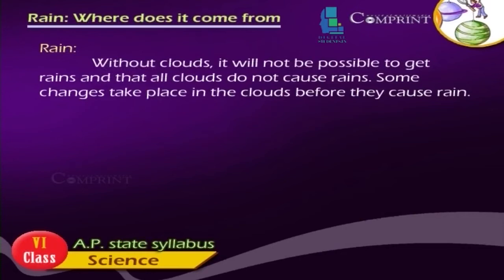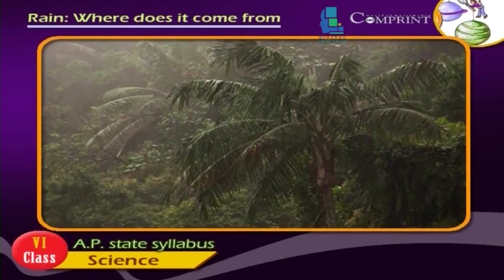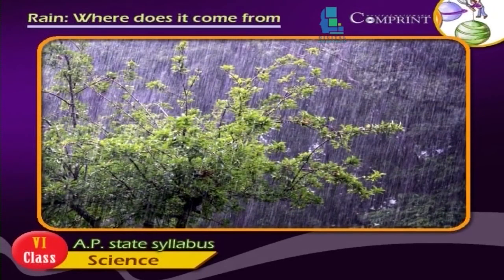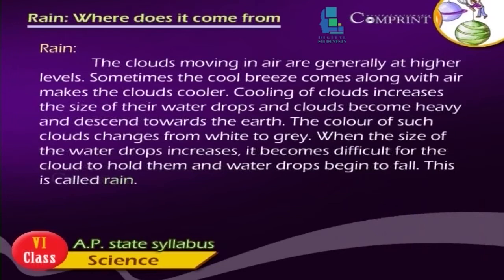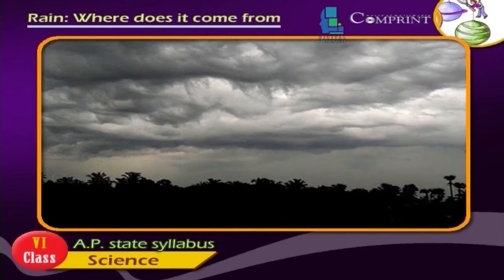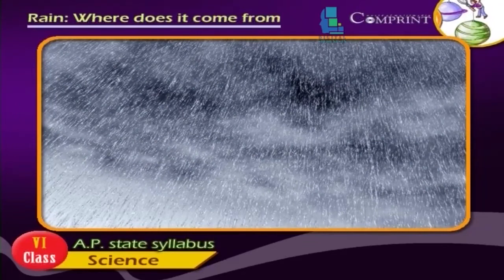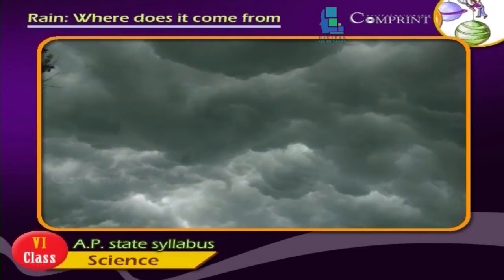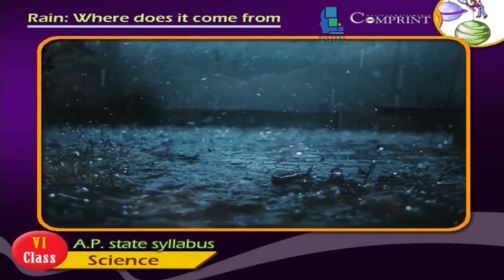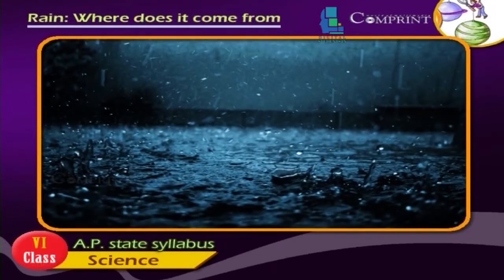Rain: Without clouds, it is not possible to get rain, and not all clouds cause rain. Some changes take place in clouds before they cause rain. The clouds moving in air are generally at higher levels. Sometimes a cool breeze makes the clouds cooler, increasing the size of their water drops. The clouds become heavy and descend towards the earth, changing colour from white to grey. When the size of the water drops increases, it becomes difficult for the cloud to hold them and they begin to fall — this is called rain.